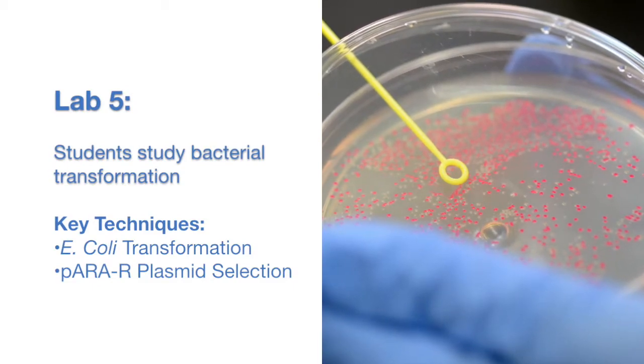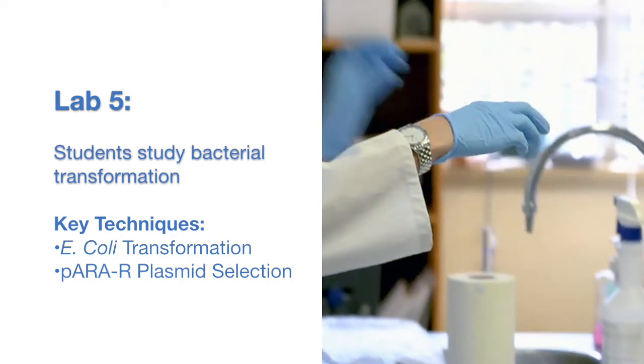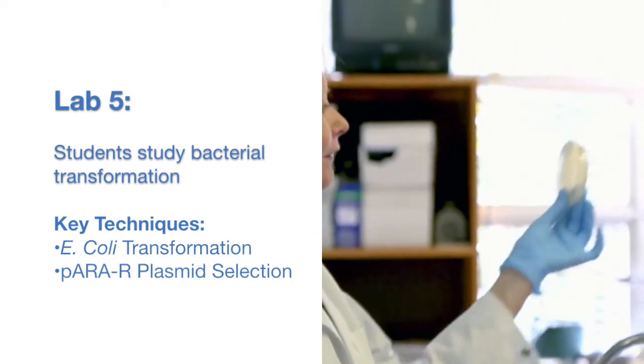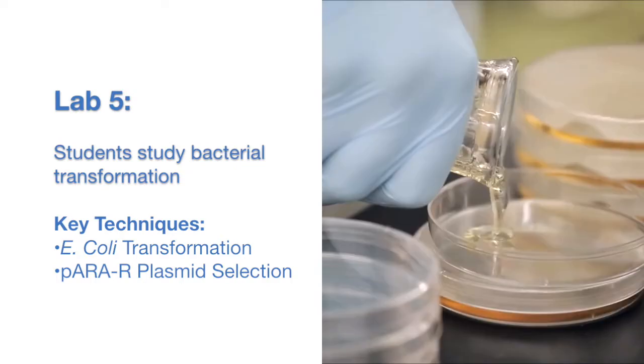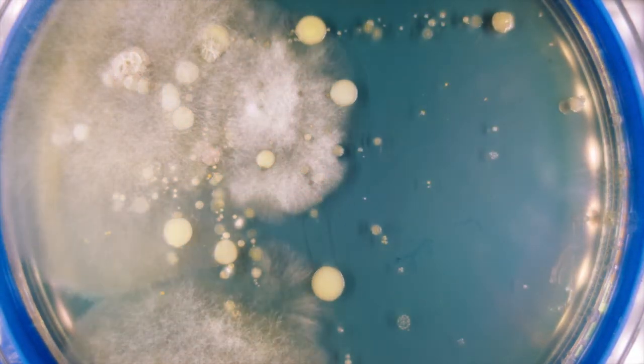Fifth, students gain a greater understanding of the process of bacterial transformation. In lab, they transform E. coli bacteria with the para-R plasmid. Students then select for the bacterial cells that contain the plasmid by growing them in the presence of antibiotics.